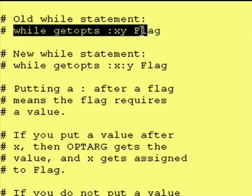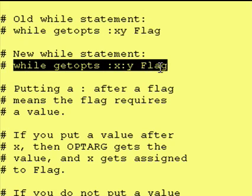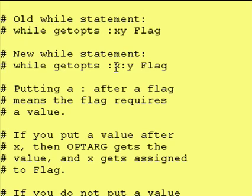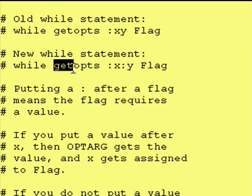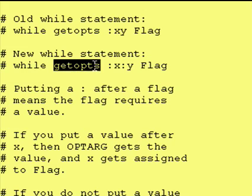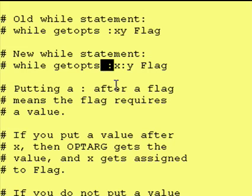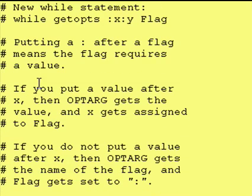This is the old getopts command from our last example, and this is the getopts command from our present example. As you can see, the only difference is that there is now a colon after the "-x", and that's what tells getopts that if the person enters a "-x" they better have a value after it. So our getopts command will still treat the "-y" the same way, still treat invalid flags the same way, and it now treats the "-x" just a little differently. Putting a colon after a flag means the flag requires a value. Pretty straightforward.